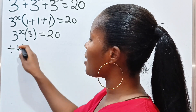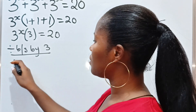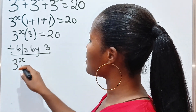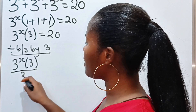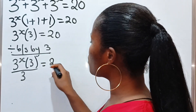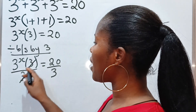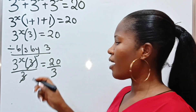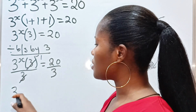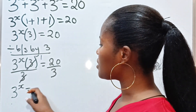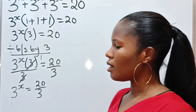Divide both sides by 3. 3 to the power of x multiplied by 3, divided by 3, is equal to 20 divided by 3. 3 will divide itself and we have one. So 3 to the power of x is equal to 20 divided by 3.